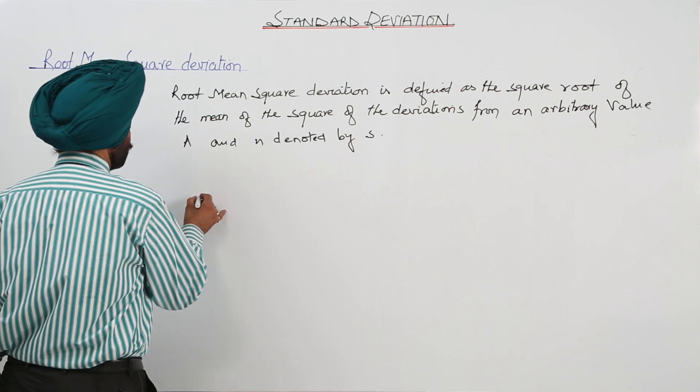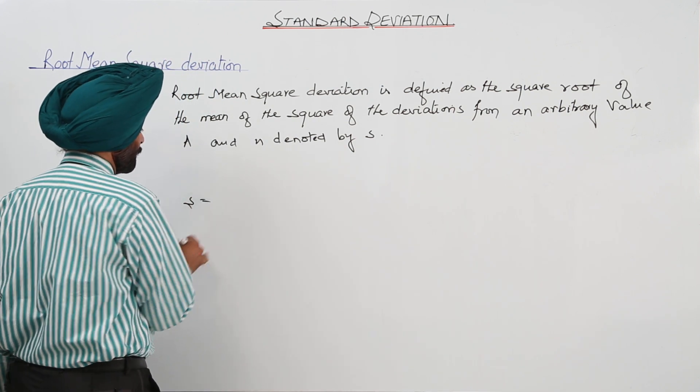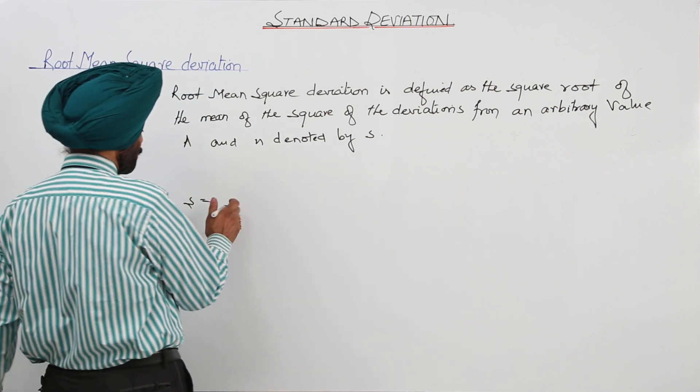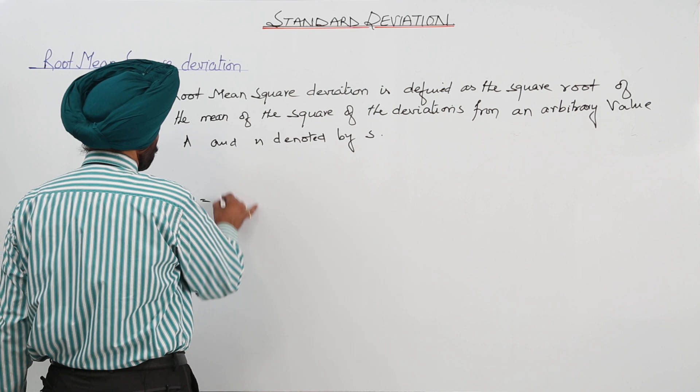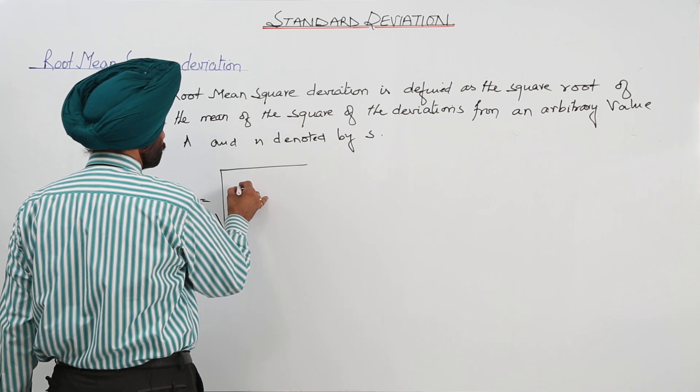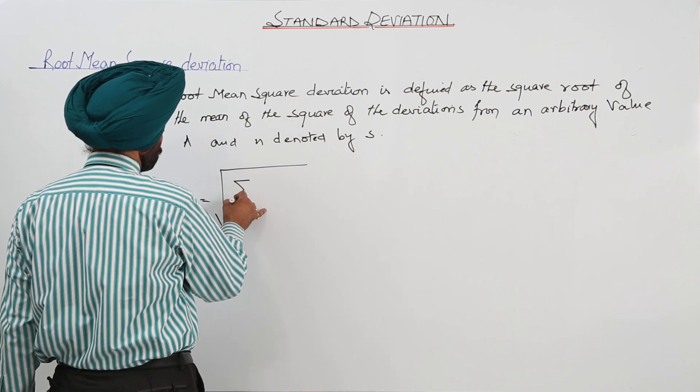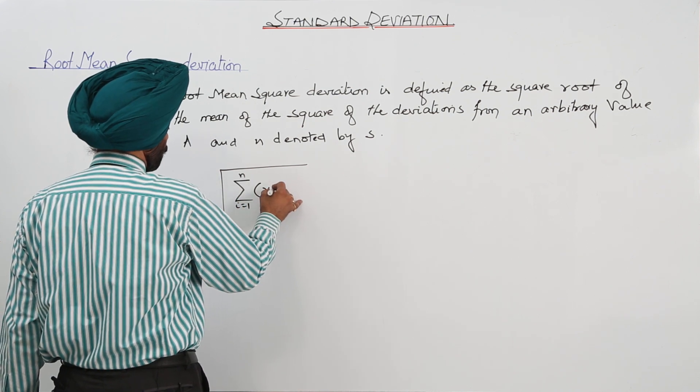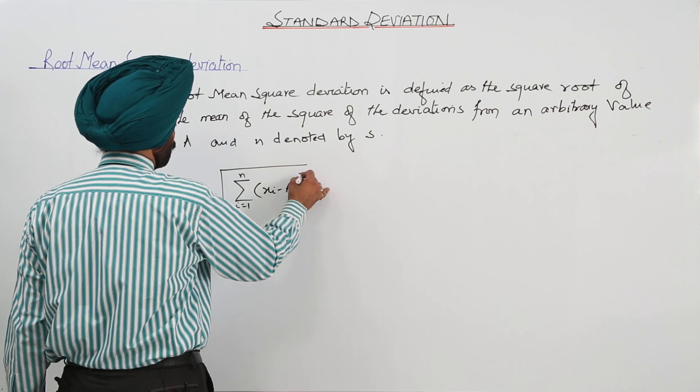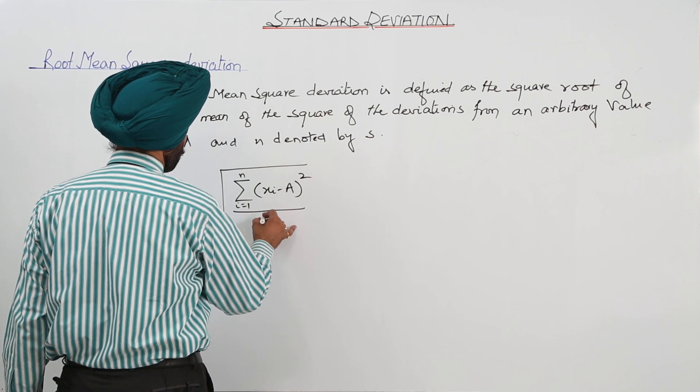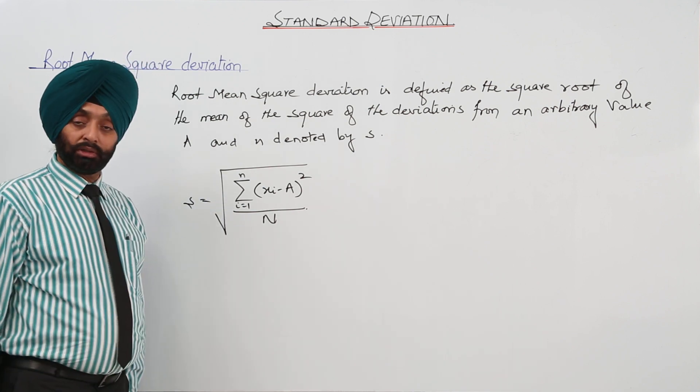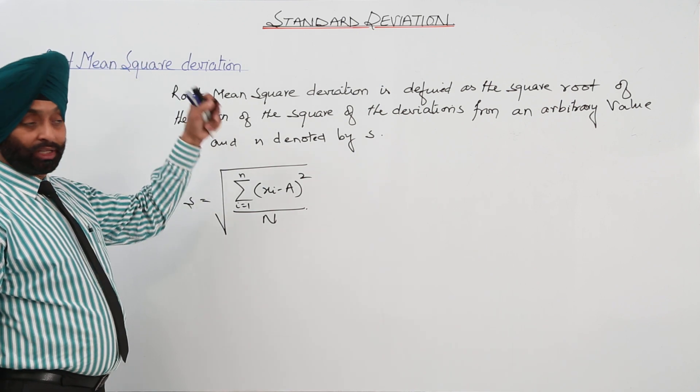Now, I am just writing a formula first. We can write s is equal to square root of summation for xi minus a whole square upon n. This is the formula to find the root mean squared deviation.